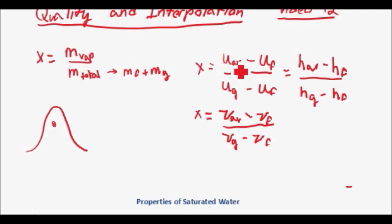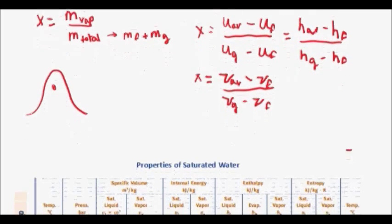Say you are given the internal energy of this position over here, or you're given the specific volume of this position over here. Using the property tables, you can actually go back, find the specific volume of the fluid and the specific volume of the gas in saturated form, and then determine this value or this value, or maybe you want to use entropy as well.